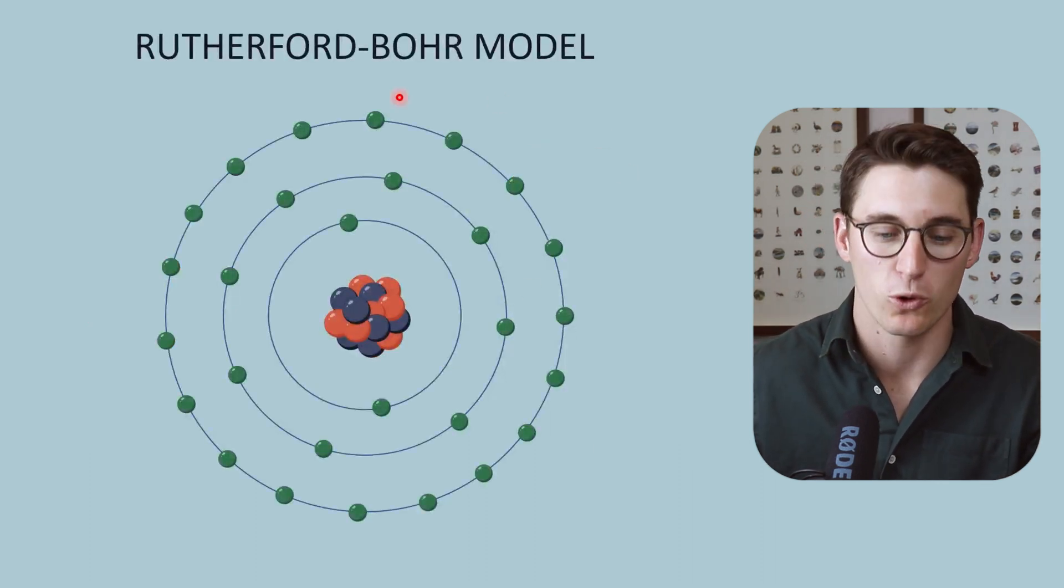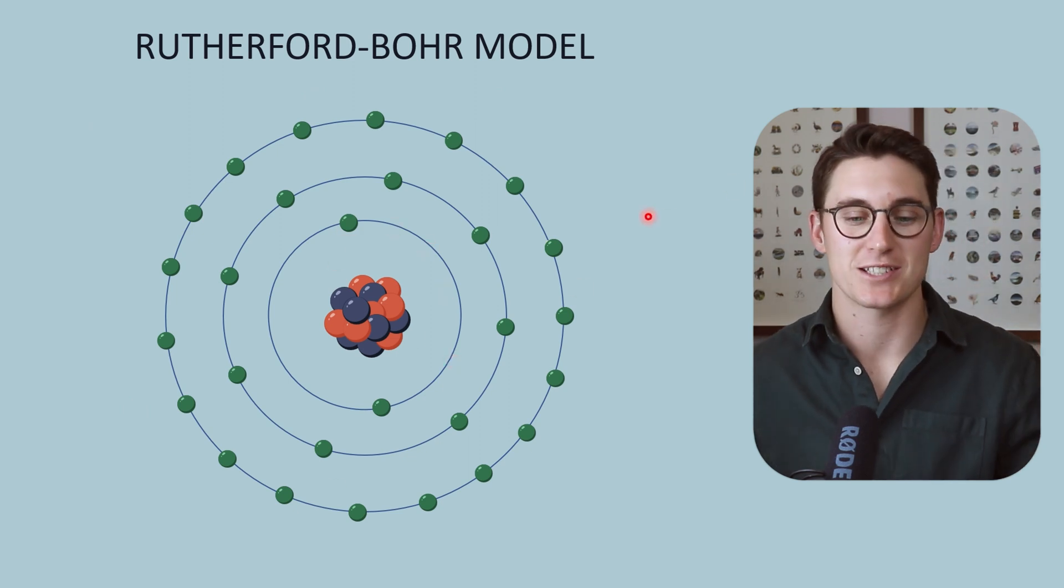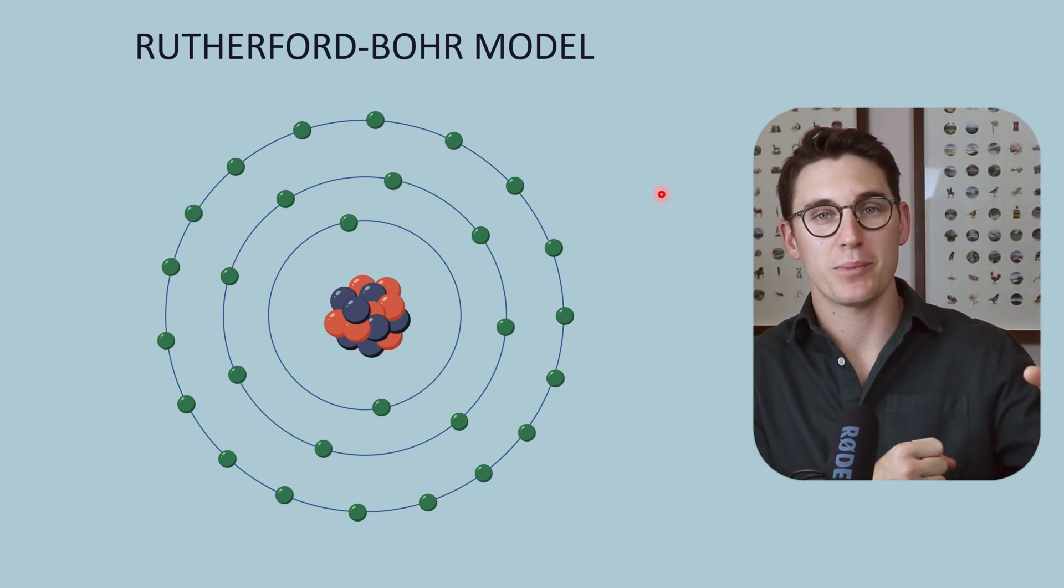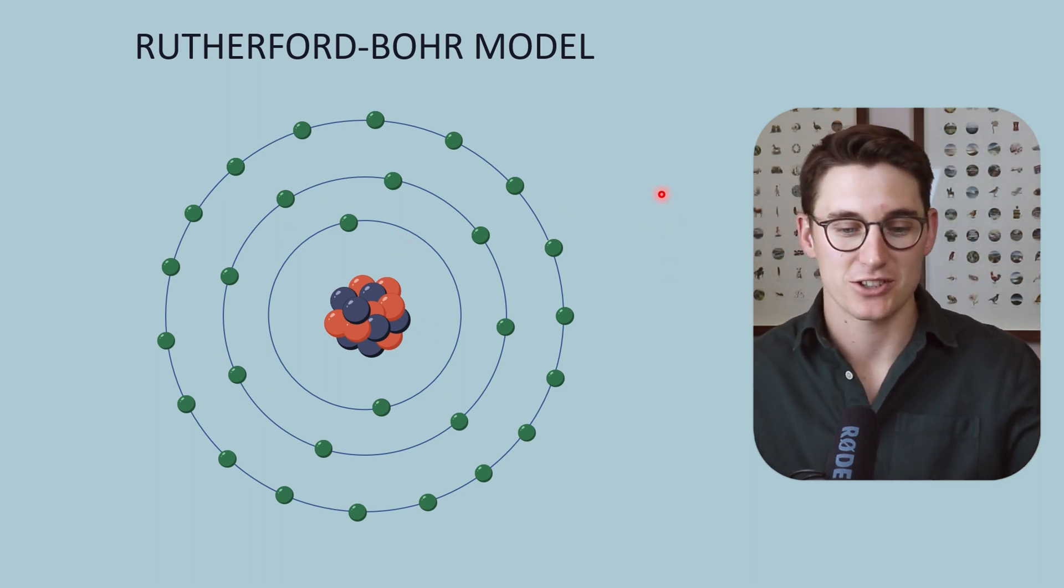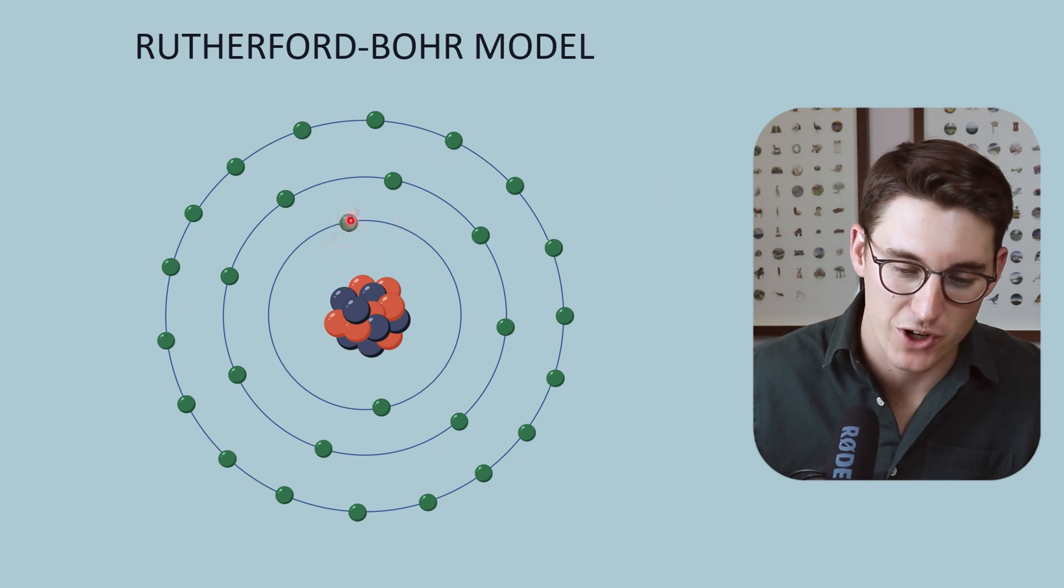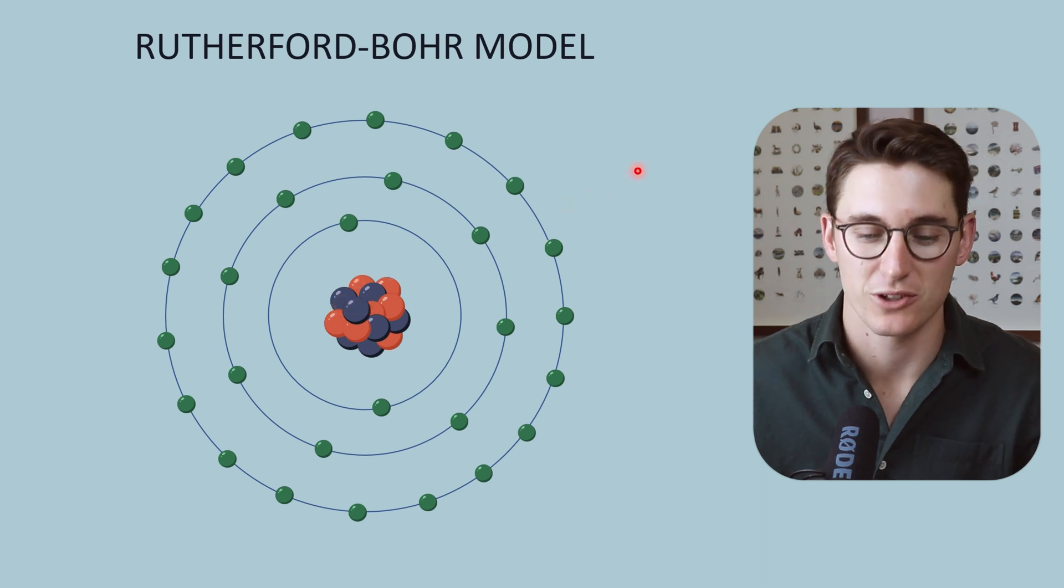This is what's known as the Rutherford Bohr model of the atom. Much like planets orbit around the sun, these electrons orbit around the nucleus and are held in place by the electromagnetic force—the force of attraction between the negative electrons and positive protons in the nucleus.